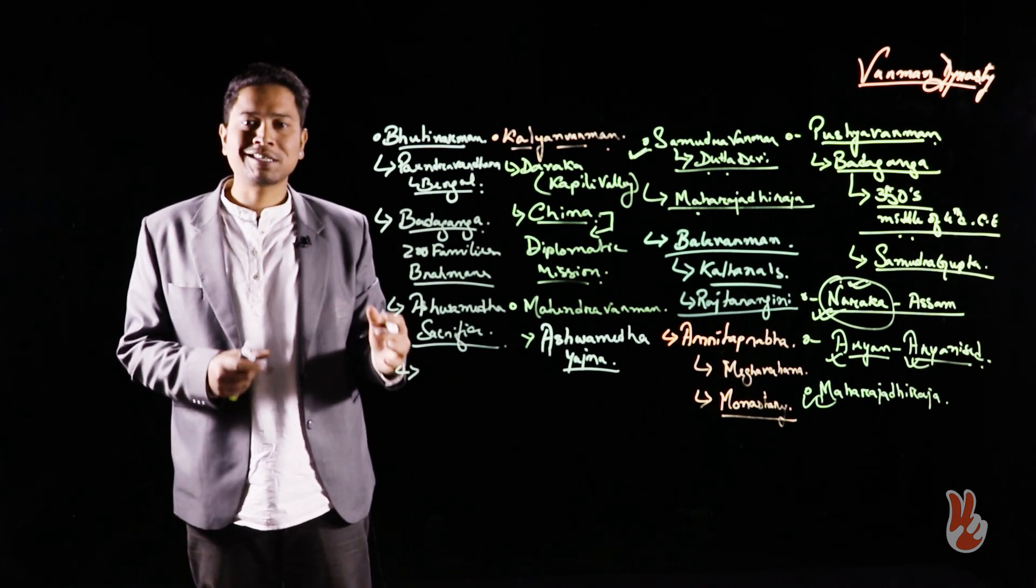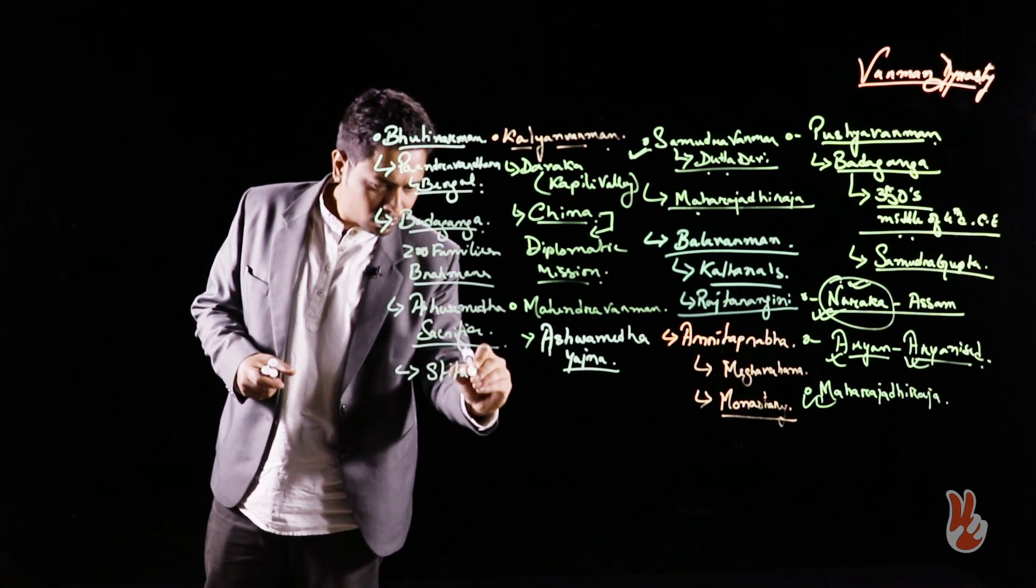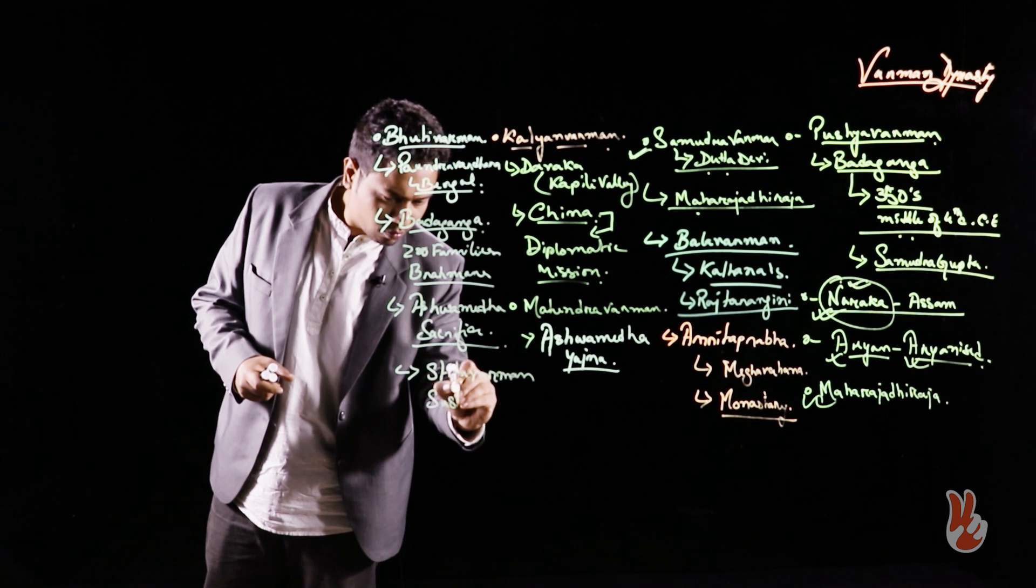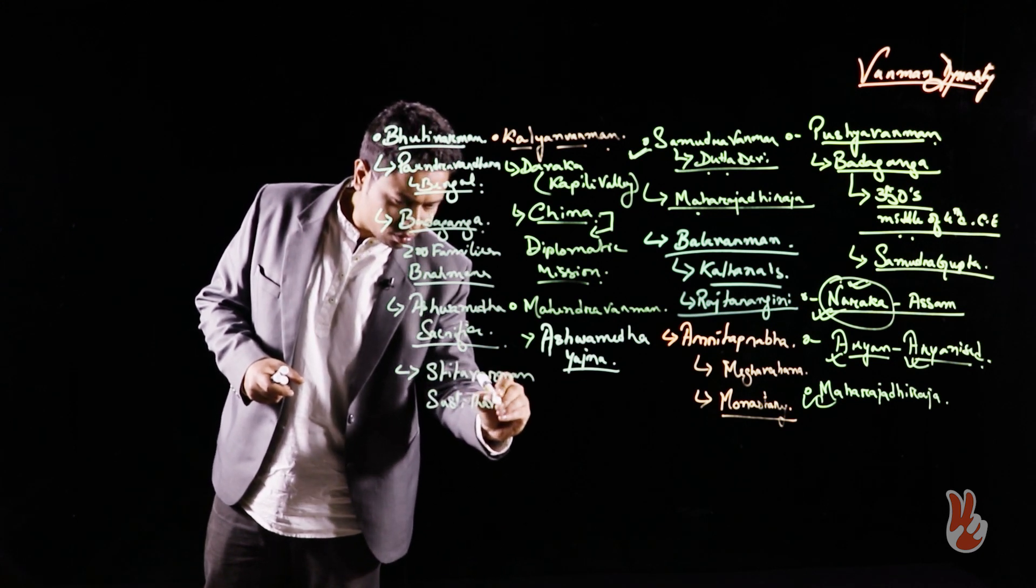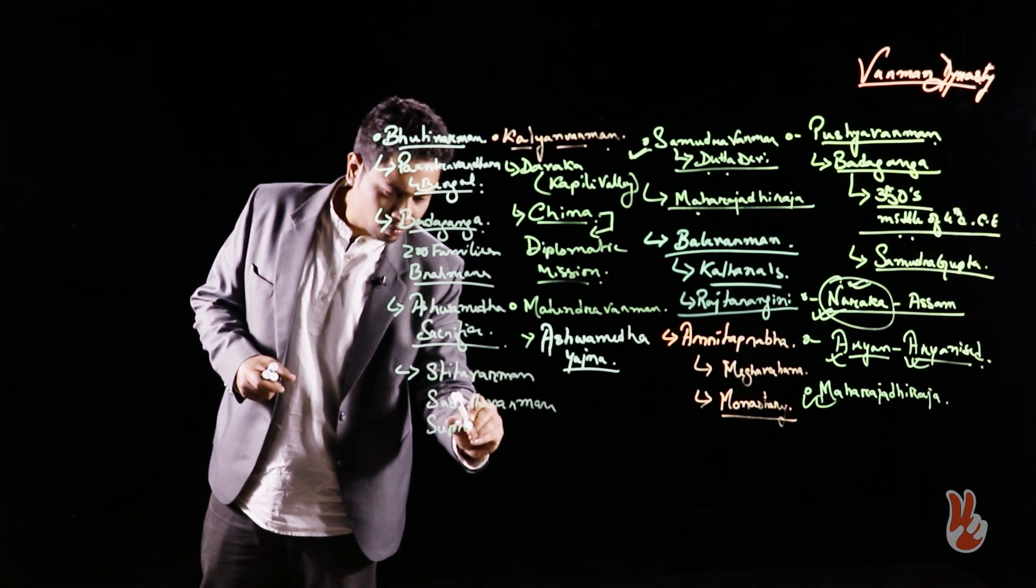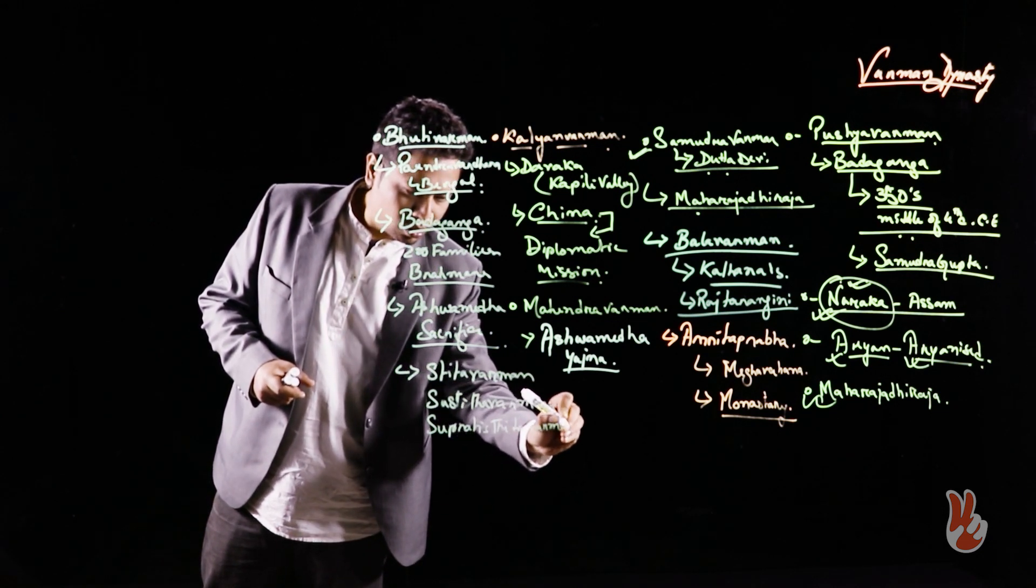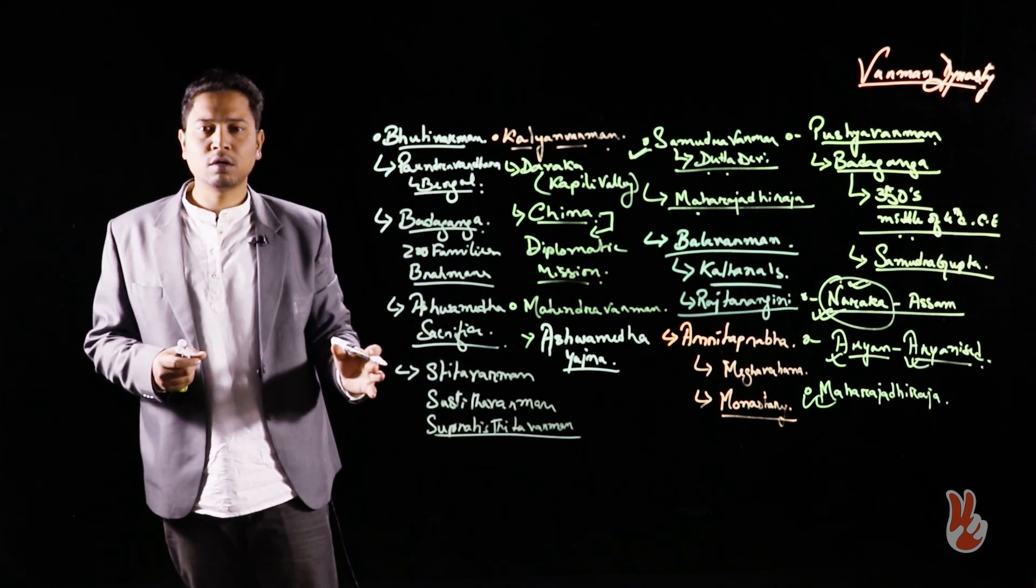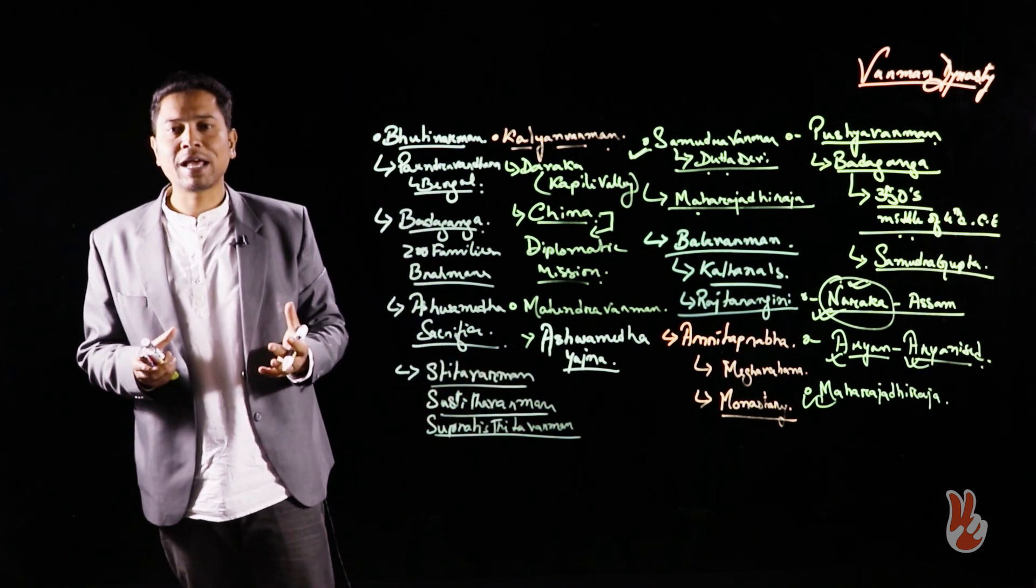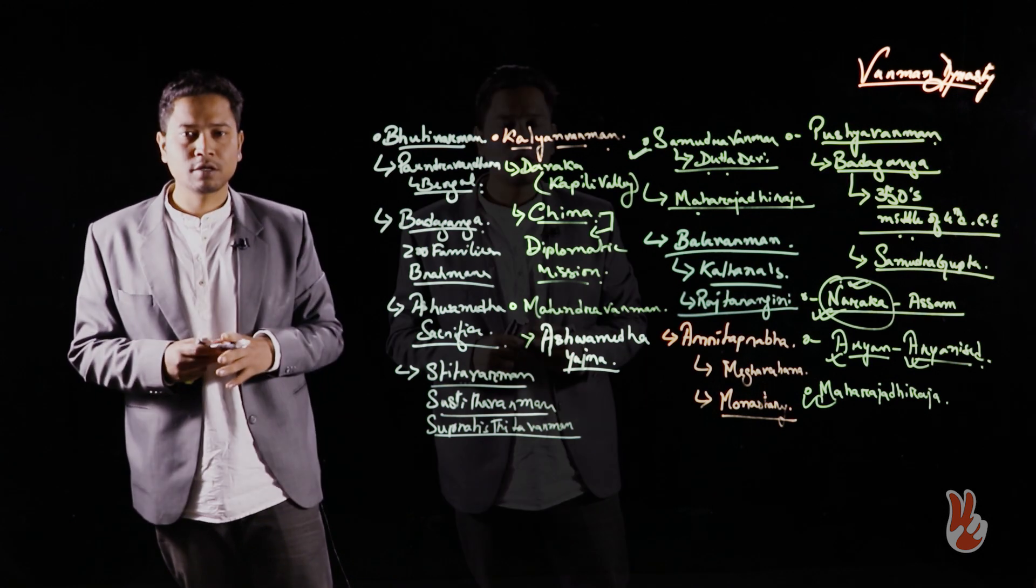Bhuti Varman is known to have been succeeded by Sthita Varman, Su Sthita Varman, and Su Pratisthita Varman. These rulers are important because it is during these rulers that we know certain kind of connections also come to light regarding the Varman dynasty and its relationship with the Gupta dynasty. We will look into it next.